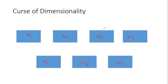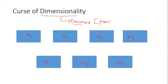Hello, today we'll be discussing something called the curse of dimensionality. This is a very important topic with respect to the understanding of feature selection and feature engineering. When we say dimensionality, this refers to dimensions, which are also called features. Features may be independent features or target output features — they are basically attributes.